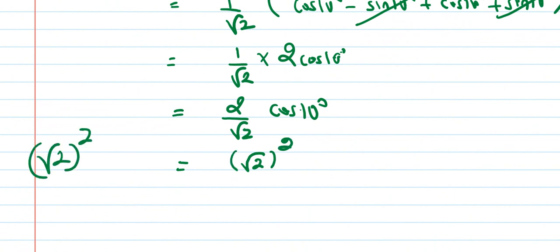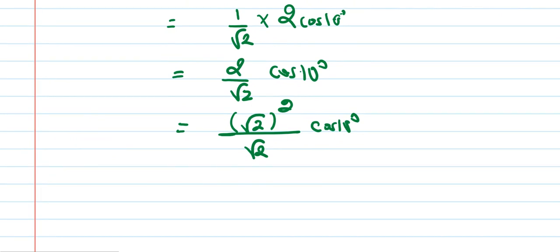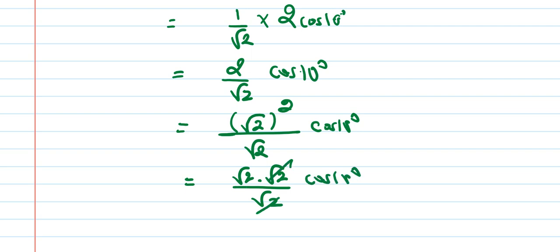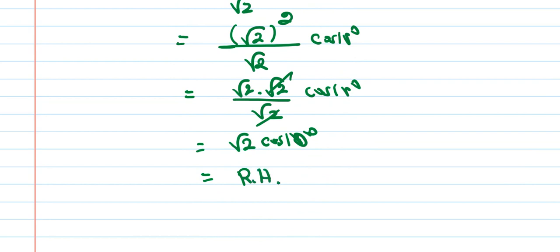So we get √2·cos10°, which equals the RHS. Hence proved. This problem is from the 2074 supplement paper.